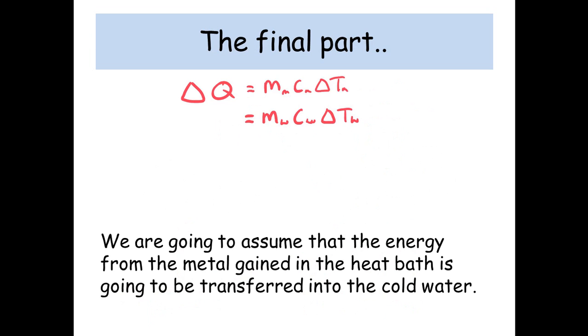So what we can say is that the mass of the metal times the specific heat capacity of the metal times the change in temperature of the metal equals the mass of the water times the specific heat capacity of the water times the change in temperature of the water.